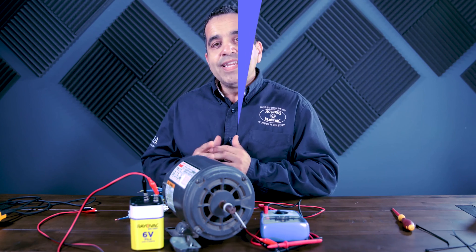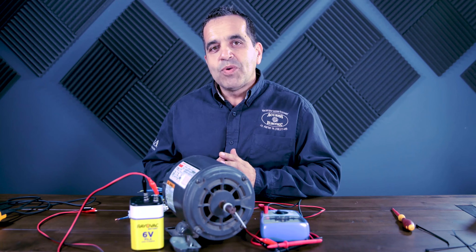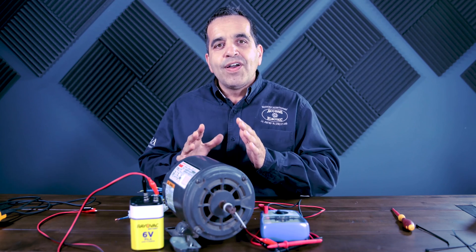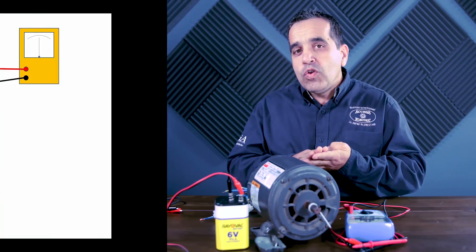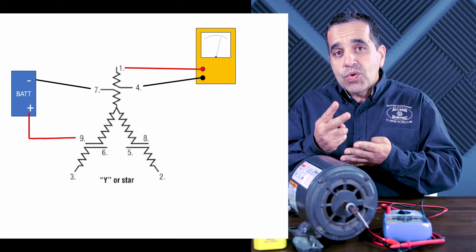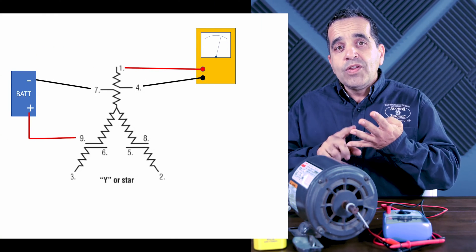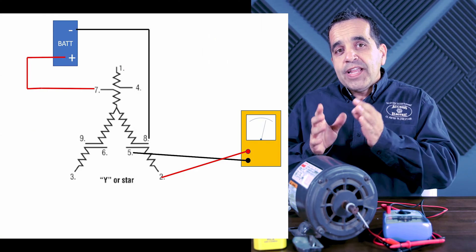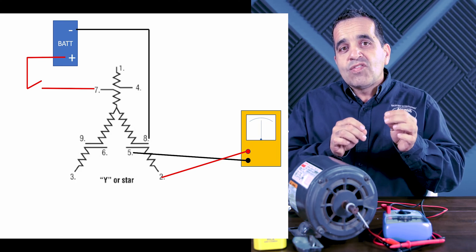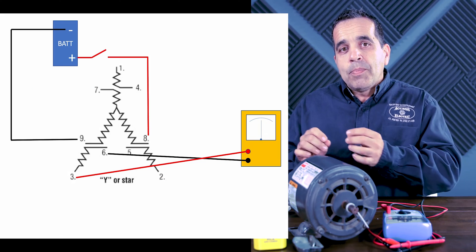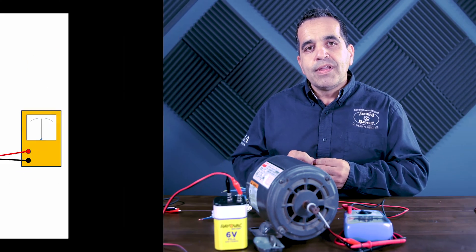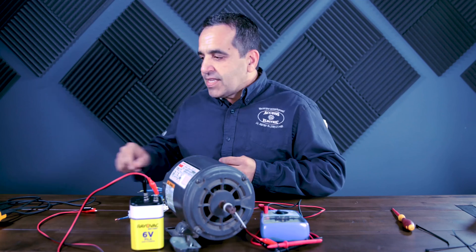So with a 9-lead Y-connected motor, you're going to have four groups of windings. You're going to have three groups of two and one group of three. And we're going to figure out which is which by using an ohmmeter to identify each group.